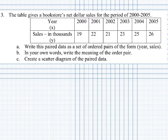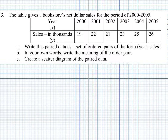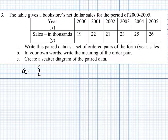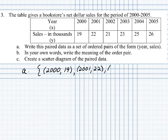The table gives a bookstore's net dollar sales for the period 2000 to 2005. The first row shows the year labeled x, starting with 2000 and increasing to 2005. The second row shows sales in thousands as our y values, beginning with 19 (representing $19,000) up to $26,000 in 2005. In part A, we write this paired data as a set of ordered pairs of the form (year, sales) using set notation. The first ordered pair is (2000, 19), then (2001, 22), and so on.